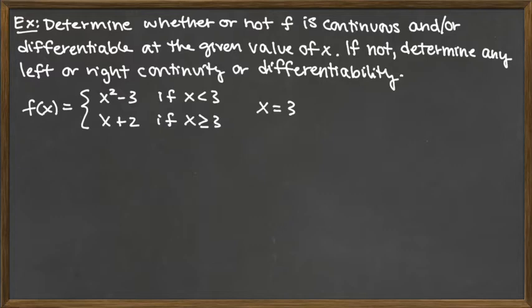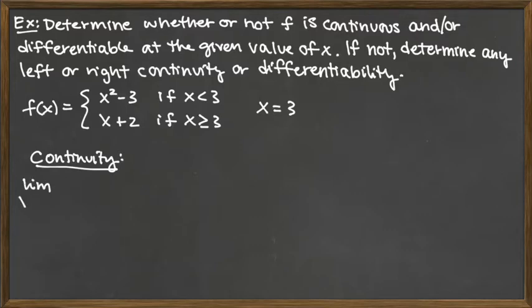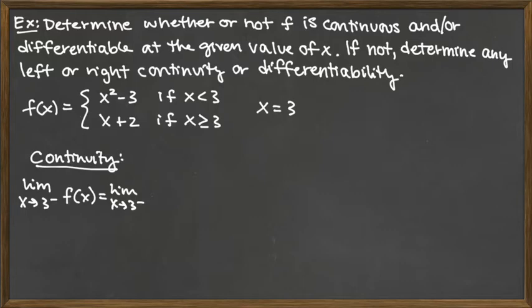If it's not continuous or not differentiable, we need to look at any left or right continuity or differentiability. So first we'll tackle continuity. For continuity, we're looking at the limit from the left, the right, and the function value at x equals 3. The limit as x approaches 3 from the left uses the polynomial x squared minus 3, because that's where x values slightly less than 3 live. Plugging in 3 gives 3 squared minus 3, which is 9 minus 3, equaling 6.